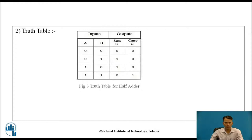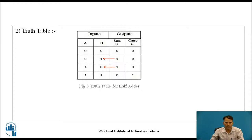The truth table lists all combinations of inputs and their respective outputs. In case of the half adder, we have two inputs A and B, so there will be four combinations: 00, 01, 10, and 11. For 00, sum is 0 and carry is 0. For 01, sum is 1 and carry is 0. For 10, sum is 1 and carry is 0. When A and B are both 1, we get sum as 0 and carry as 1. We can observe that sum output occurs for the combinations when A and B are 01 and 10, and carry output occurs for only one combination when A and B are both 1.